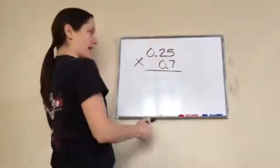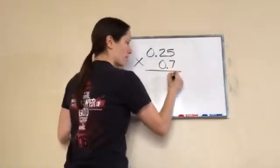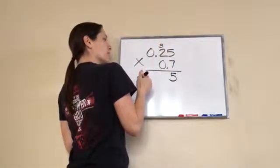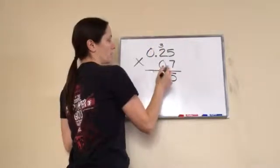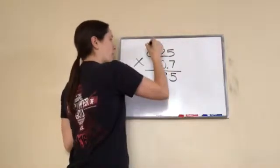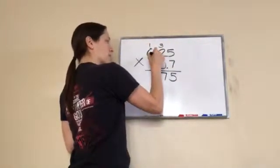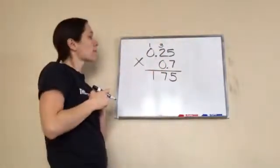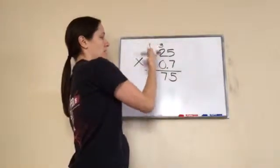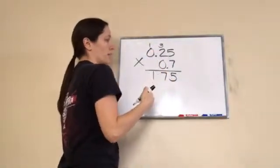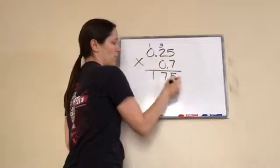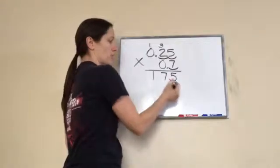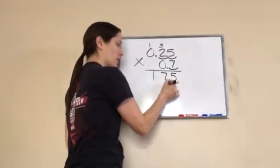Let's work it together. Seven times five is thirty-five, carry the three. Seven times two is fourteen plus three more is seventeen, carry the one. Seven times zero is zero plus one is one. We don't have to do the zeros unless you just want to. Then let's count—remember we're done with our answer now—let's count after the decimals: one, two, three.